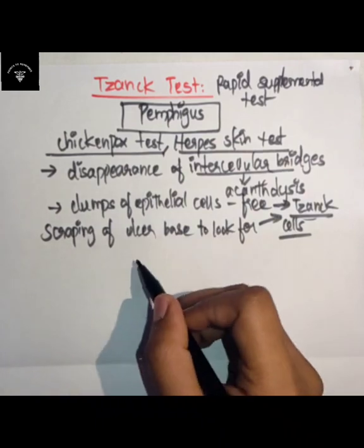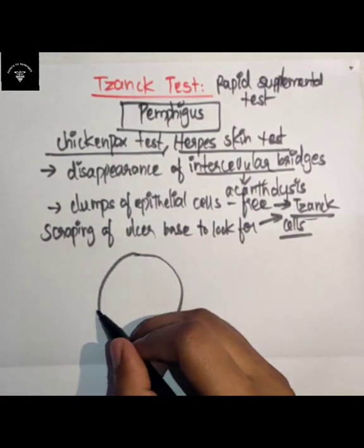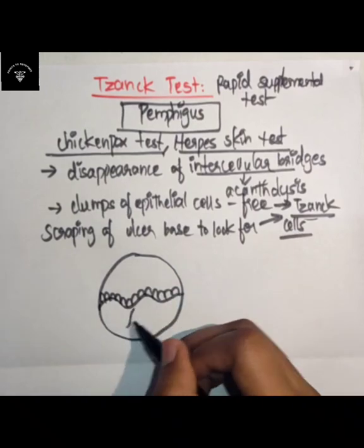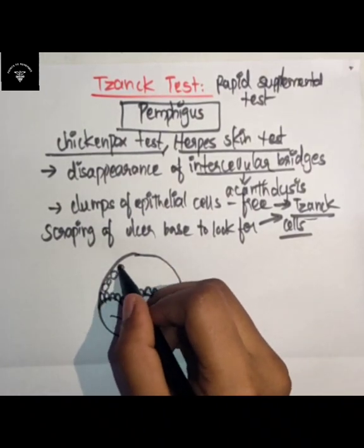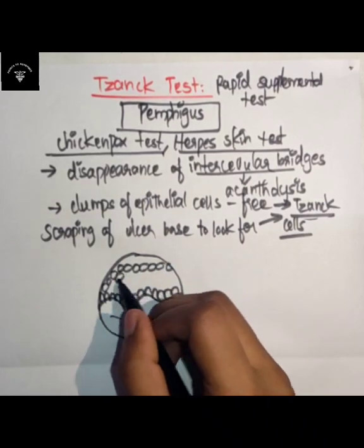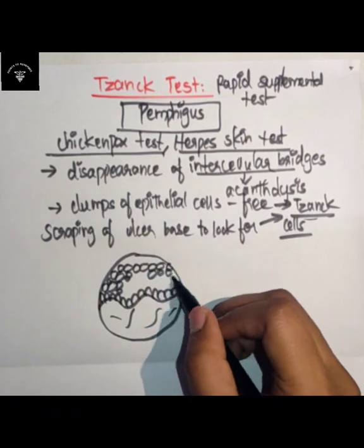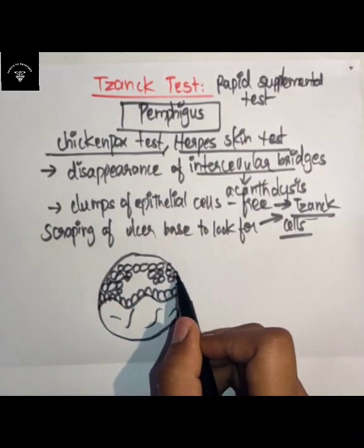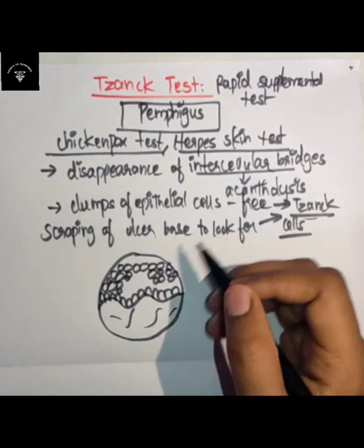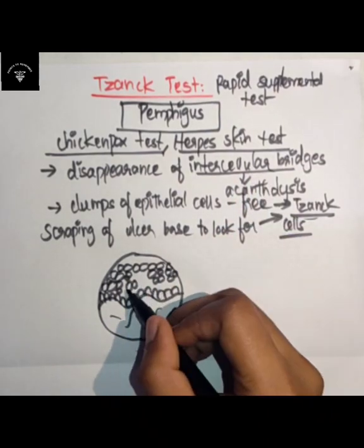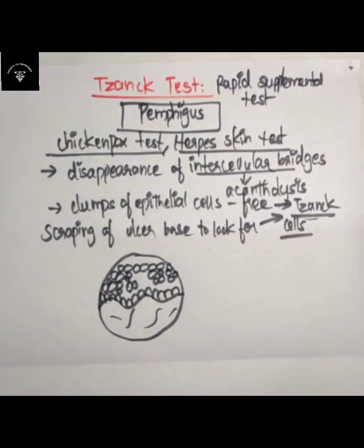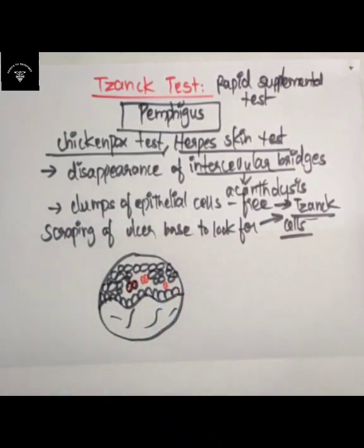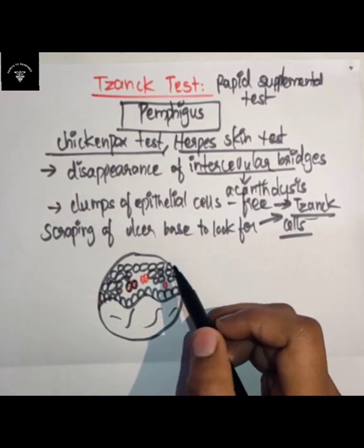Looking at this diagram, the histological section shows the epithelium and the connective tissue. There is loss of intercellular bridges — no continuity — that is acantholysis. Clumps of epithelial cells are found lying free within the vesicular space, like this, and these cells are known as Tzanck cells.